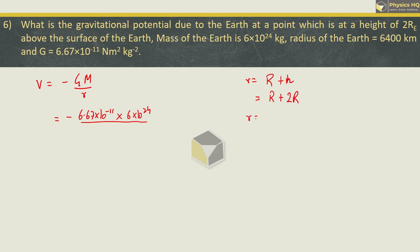Capital R is radius of earth, and height is twice the radius of earth, so small r is three times the radius of earth, which is 3 × 6.4 × 10⁶ meters. This becomes 6.67 divided by 3.2 × 10⁻¹¹⁺²⁴⁻⁶, which is 10⁷. When you divide 6.67 by 3.2, you get approximately 2.08. So this is the potential we get at a height of twice the radius from the surface of the earth.